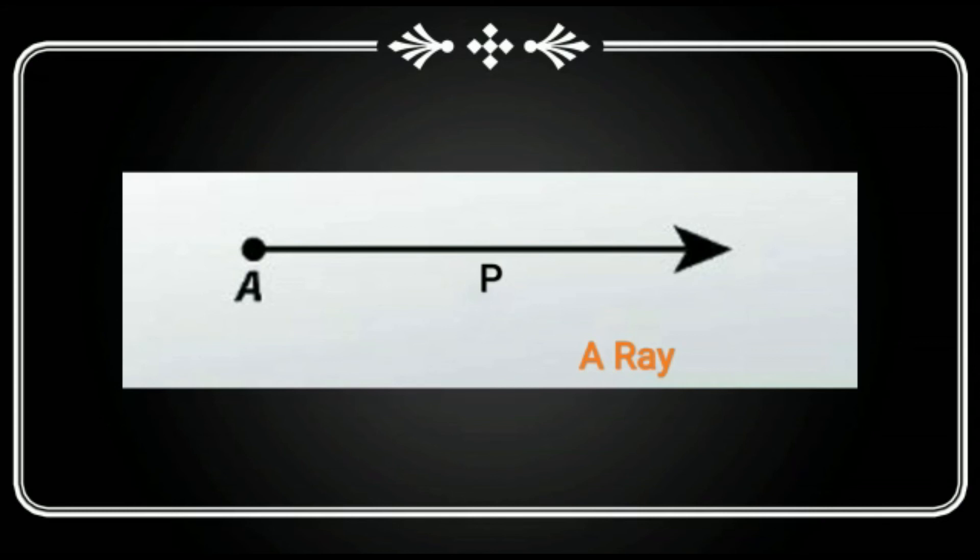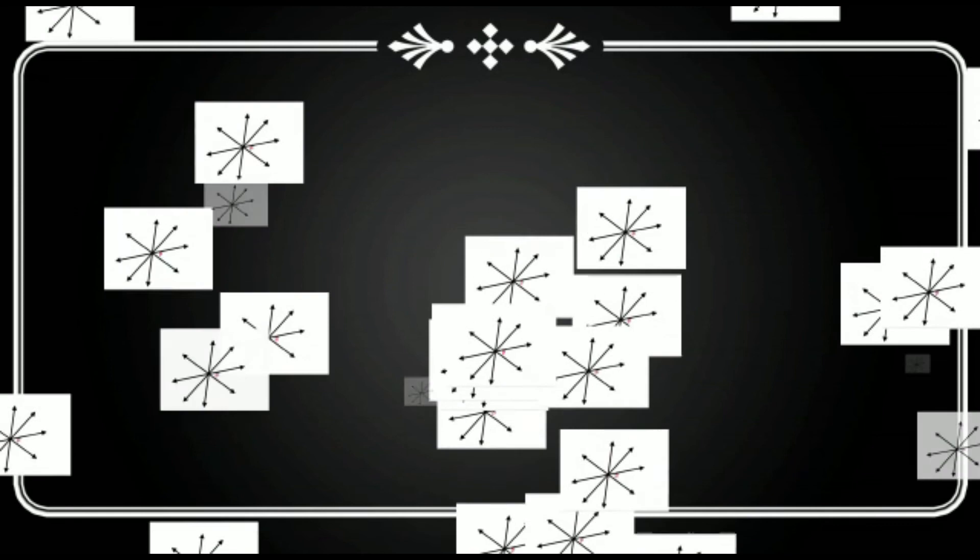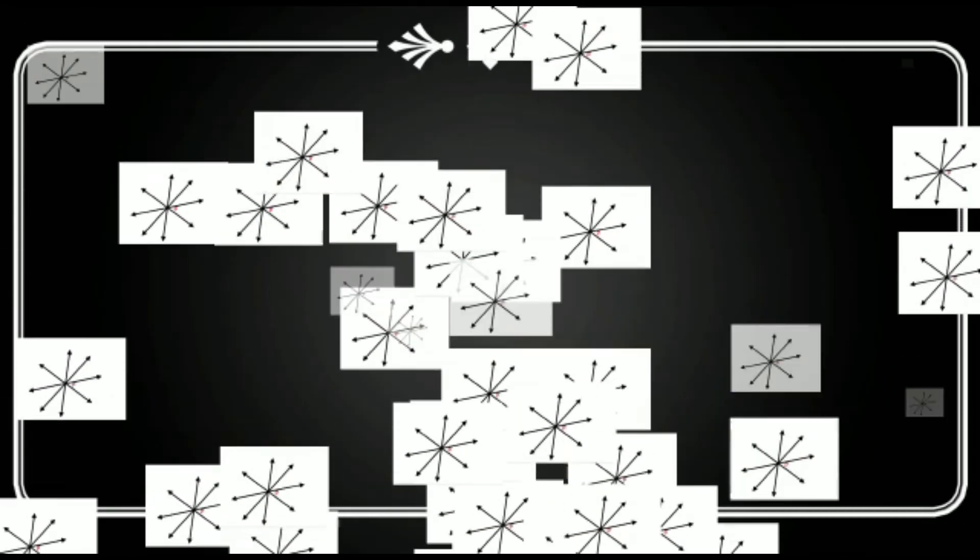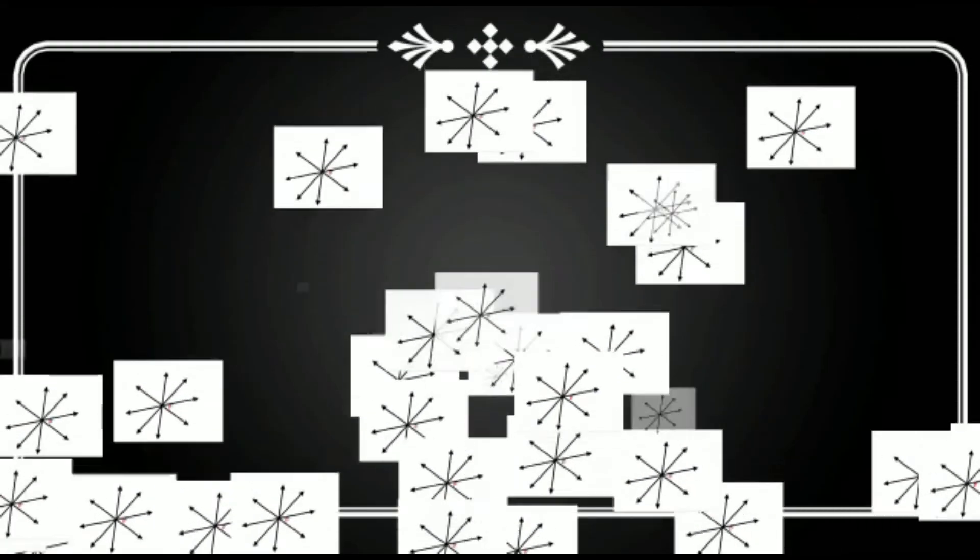P is any point on the ray and ray AP has no end point. From a given point P, a number of infinite rays can be drawn like this one.